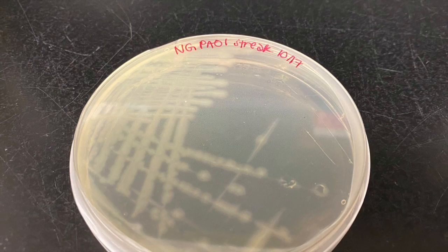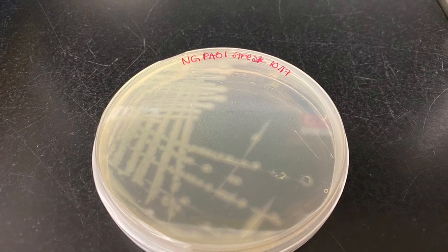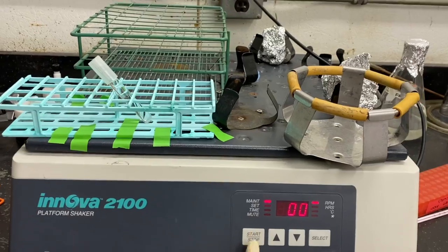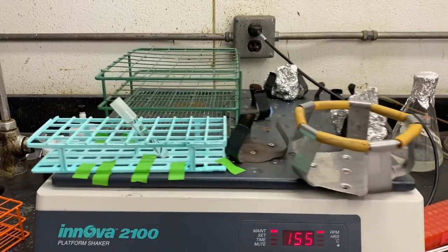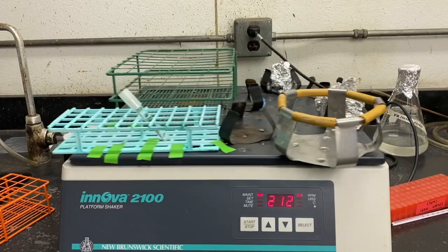Grabbing colonies from a streak plate, be sure not to puncture the agar. Lightly scrape the surface. Vortex the liquid culture to create a homogenous concentration. Then incubate your liquid culture of the target organism Pseudomonas aeruginosa in a shaker tray for 8 hours at 37 degrees celsius.